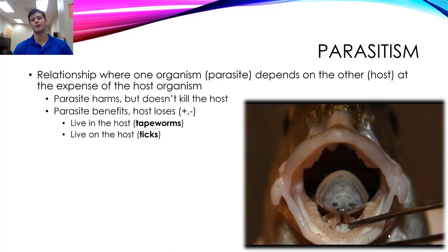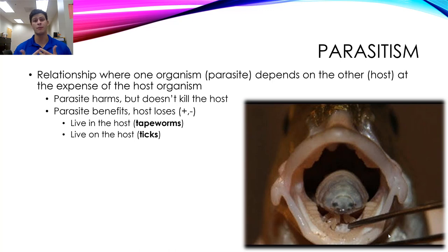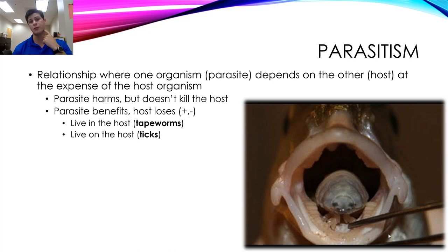Parasitism is a relationship where one organism, the parasite, depends on another organism, the host, at the expense of that host. A parasite harms but doesn't actually kill its host because it needs to live there. The parasite benefits by getting a home and resources; the host loses resources and finds it harder to survive. Examples include tapeworms living in the gut, ticks sucking blood from the host for reproduction, and isopods that enter a fish's mouth, eat out the tongue, and then replace it for the rest of the fish's lifespan.